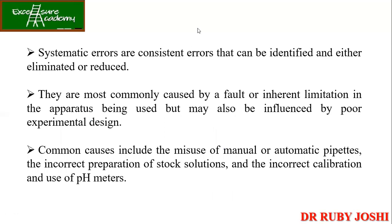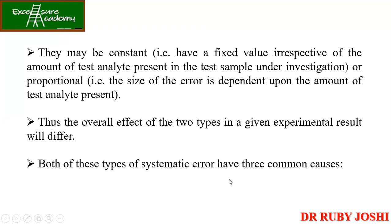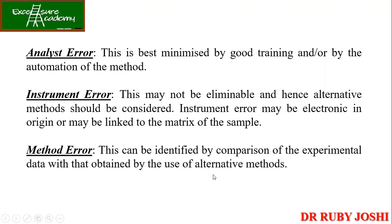Systematic errors are consistent errors that can be identified and either eliminated or reduced. They are most commonly caused by a fault or inherent limitation in the apparatus being used. For example, automatic pipettes, incorrect preparation of stock solutions, or improper pH meter calibration can produce systematic errors. These errors may be constant or proportional, and both types have three common causes.